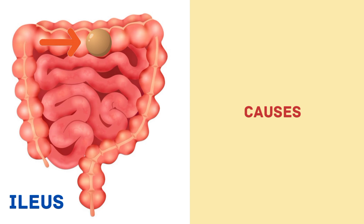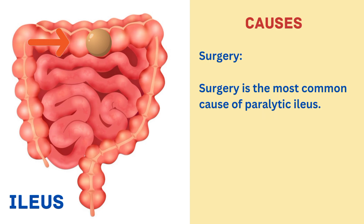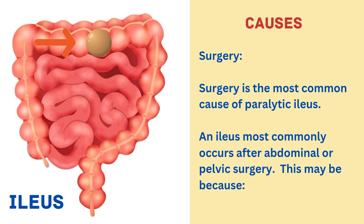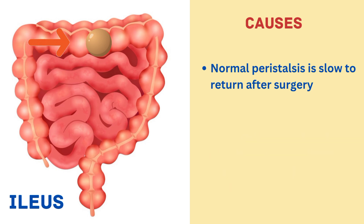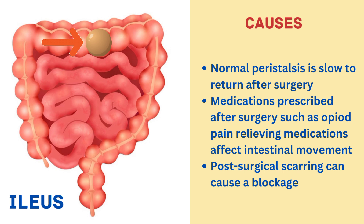Now let's discuss the causes. The first cause is surgery. Surgery is the most common cause of paralytic ileus, and it most commonly occurs after abdominal or pelvic surgery. This may be because normal peristalsis is slow to return after surgery, medications prescribed after surgery such as opioid pain-relieving medications affect intestinal movement, and post-surgical scarring can cause a blockage.